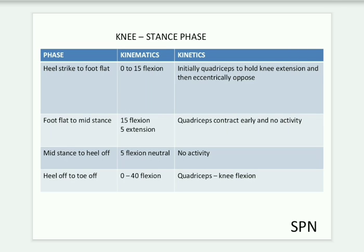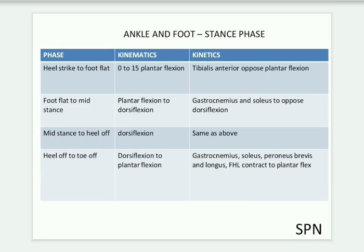For knee kinematics in stance phase: heel strike to foot flat is 0 to 15 degrees of flexion; quadriceps initially contract to hold the knee in extension, then eccentrically to oppose further flexion. Foot flat to mid stance: 15 degrees flexion to 5 degrees extension; quadriceps contract early, then no activity. Mid stance to heel off: 5 degrees flexion to neutral, no activity. Heel off to toe off: 0 to 40 degrees flexion; quadriceps active for knee flexion.